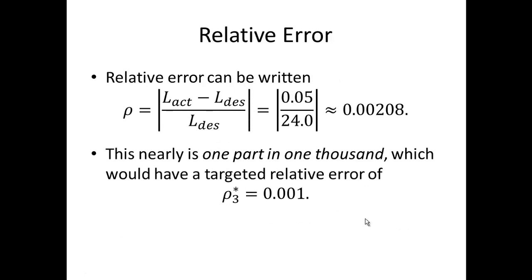On the other hand, let's talk about relative error. Relative error can be written as the absolute error divided by the true value. So we have 0.05 divided by 24.0, which gives us a relative error of approximately 0.00208. This is nearly the one part in 1,000 that we were looking for with three significant figures. For three significant figures, a targeted relative error would be rho-star of 0.001, where the subscript three indicates one part in 1,000, representative of three significant figures.